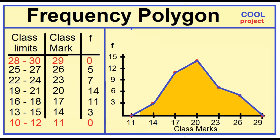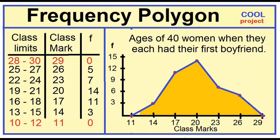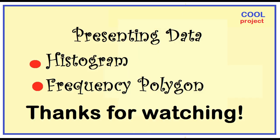This is the frequency polygon of the set of data representing the ages of 40 women when they each had their first boyfriend. A frequency polygon presents the data by using lines that connect points plotted for the frequencies at the class marks of the classes. Thanks for watching.